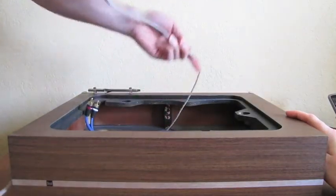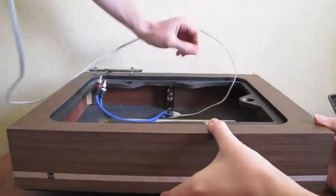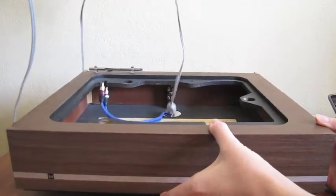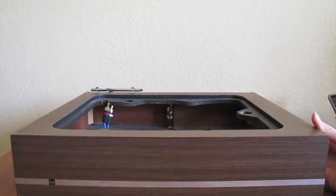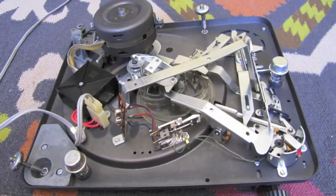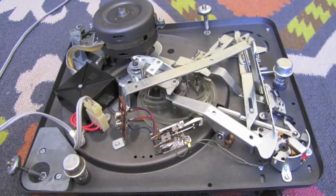Pull the gray power cord upward and through the base. Place the turntable upside down on a soft surface to prevent it from being scratched.